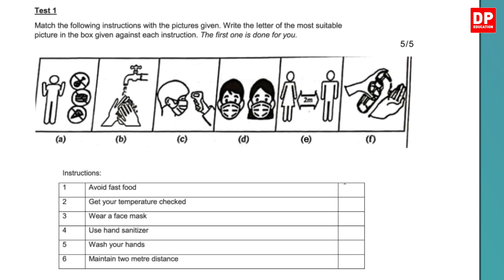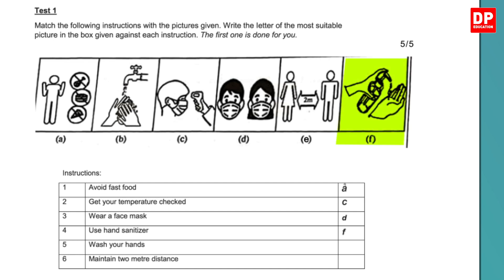Now let's look at the picture and match it to the instructions given. 1. Avoid fast food — that's A. 2. Get your temperature checked — that's C. 3. Wear a face mask — that's D. 4. Use hand sanitizer — that's A.